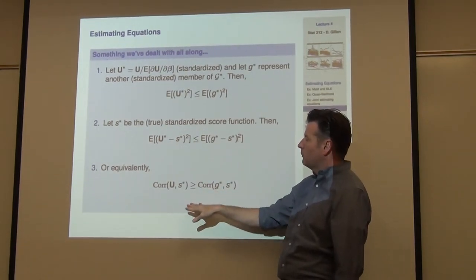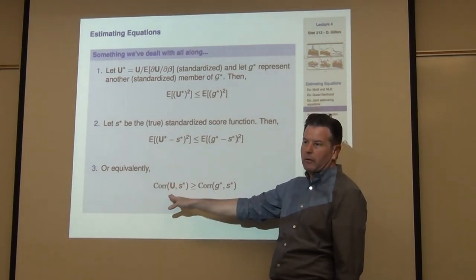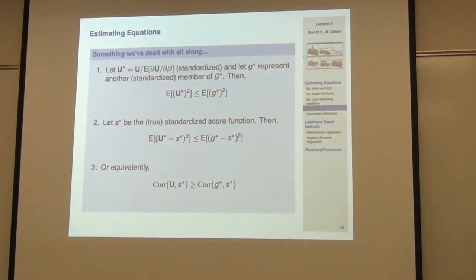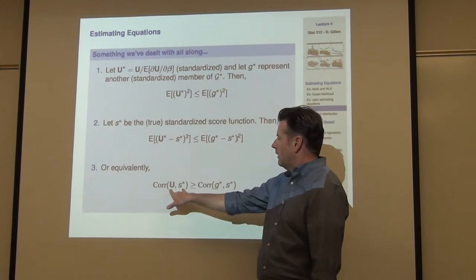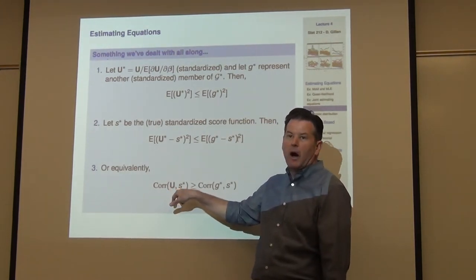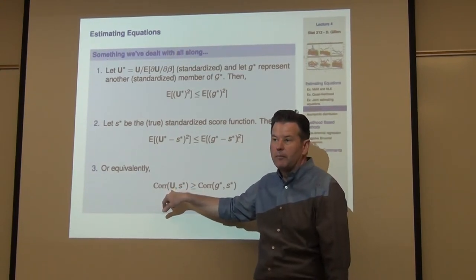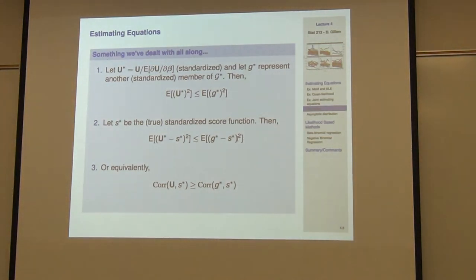Again, intuitively what you're saying is that you're approximating your optimal estimating function best with U star. In other words, that correlation is as high as possible.